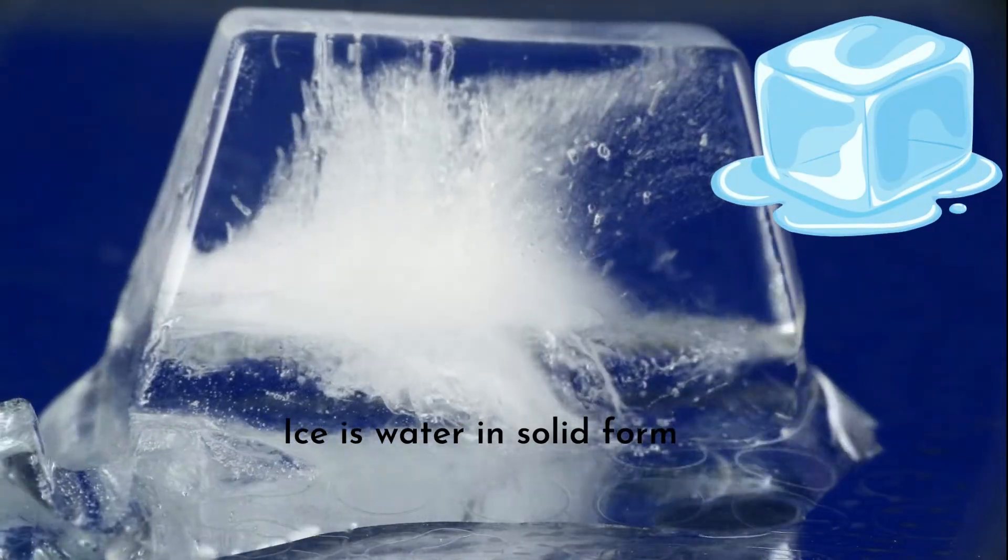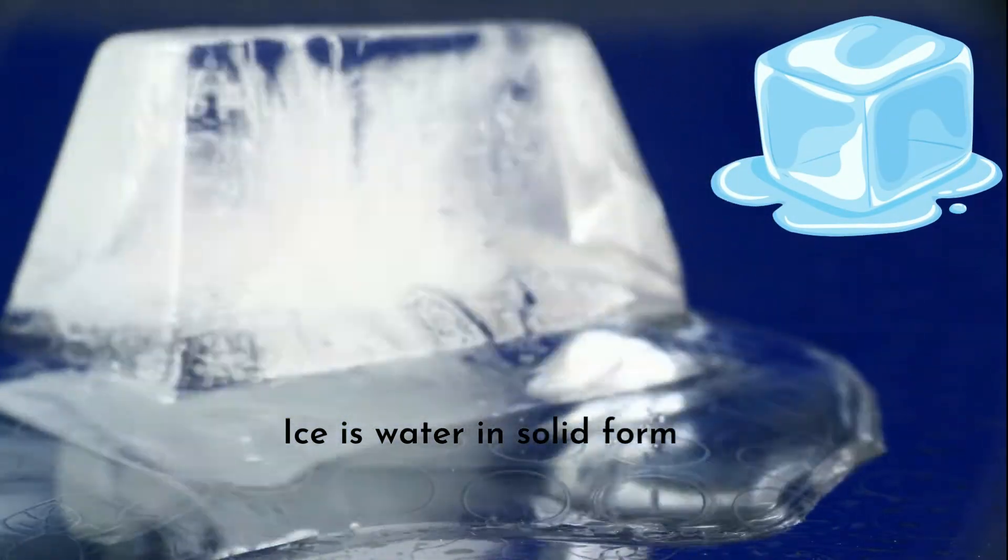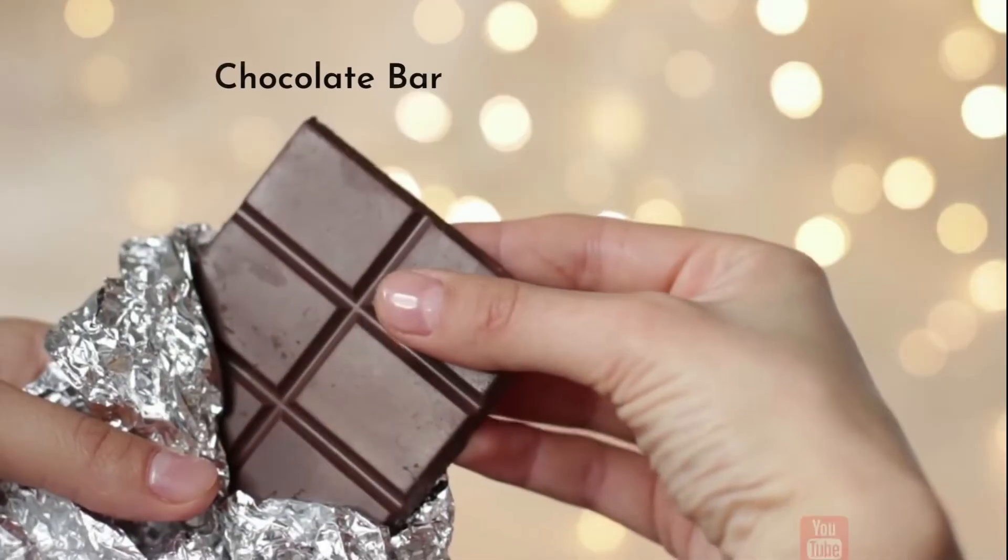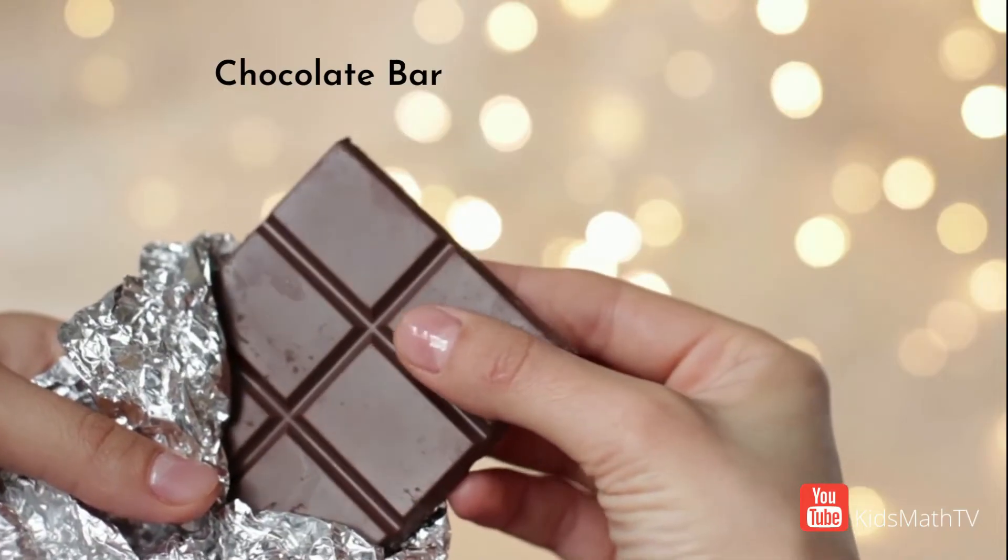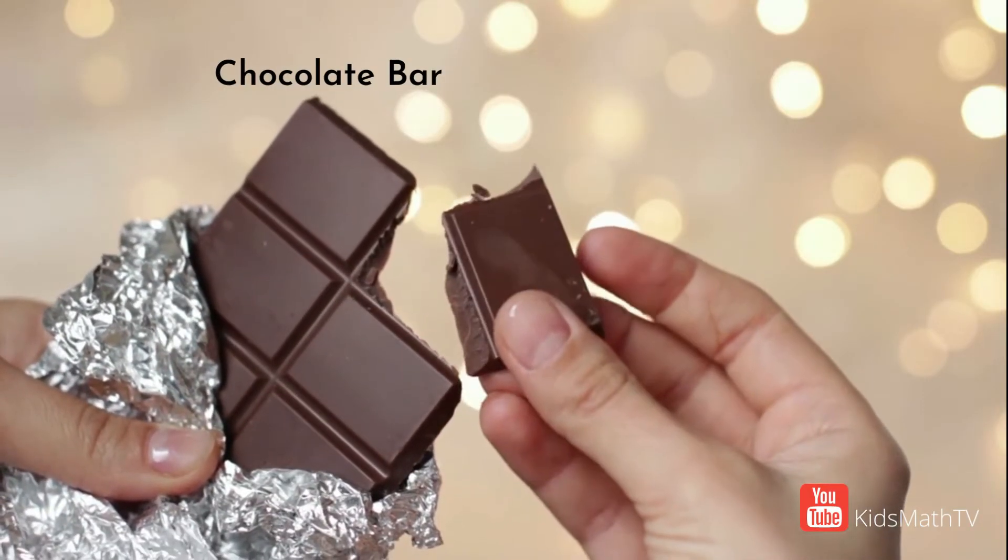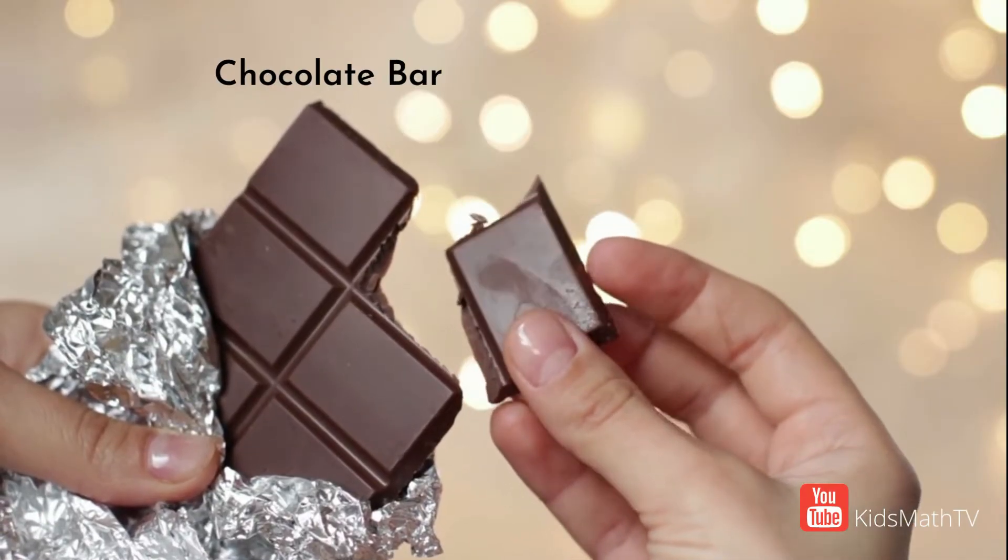When ice melts, the water returns to a liquid form without any change in its composition. In the same sense, when you split a chocolate bar or add sugar to your tea, the form of these substances might have changed, but their chemical composition has not.